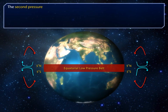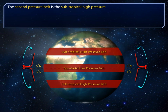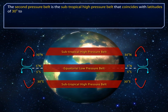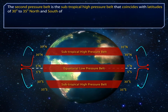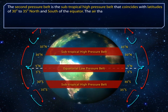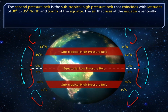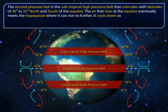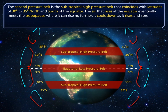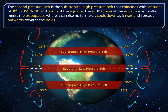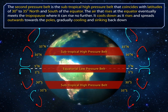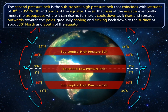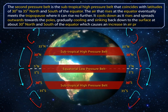The second pressure belt is the subtropical high pressure belt that coincides with latitudes of 30 degrees to 35 degrees north and south of the equator. The air that rises at the equator eventually meets the tropopause where it can rise no further. It cools down as it rises and spreads outwards towards the poles, gradually cooling and sinking back down to the surface at about 30 degrees north and south of the equator, which causes an increase in air pressure.